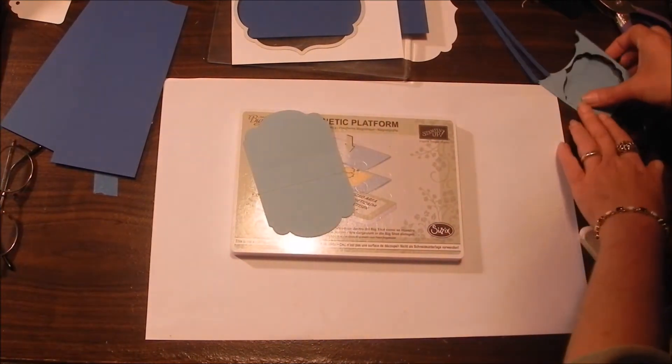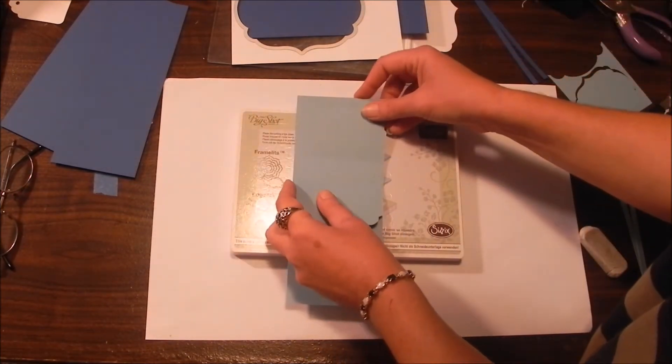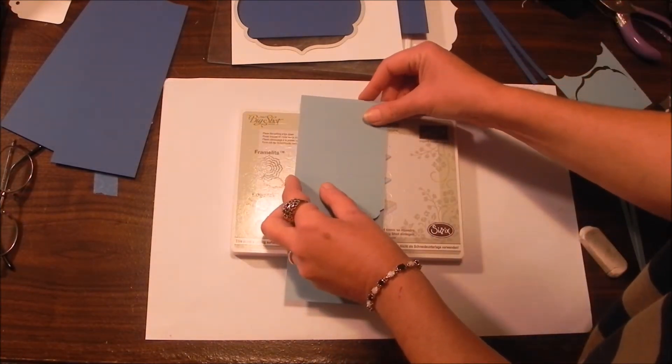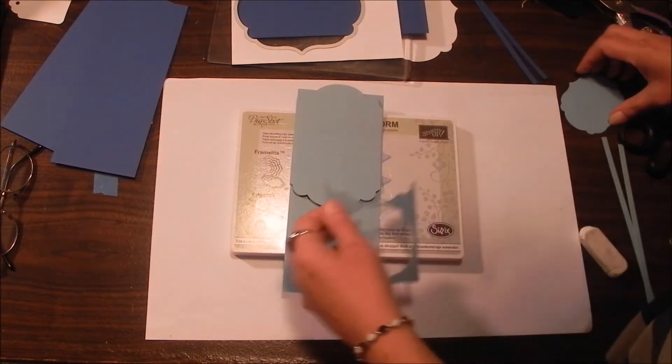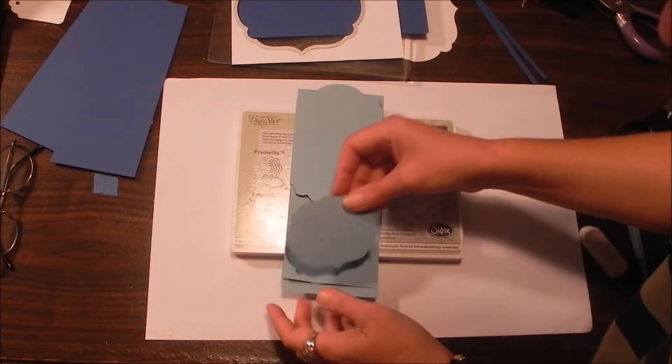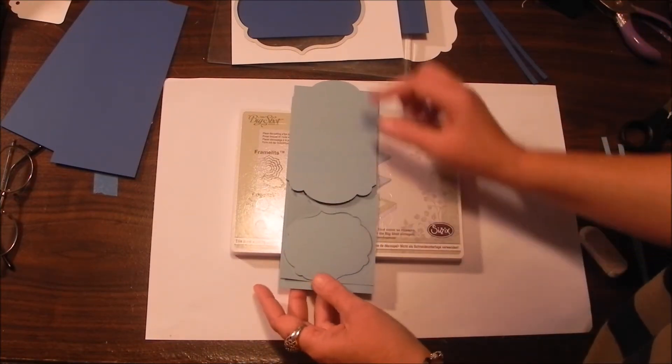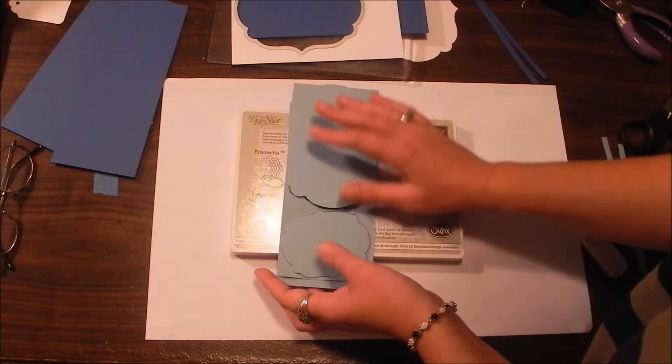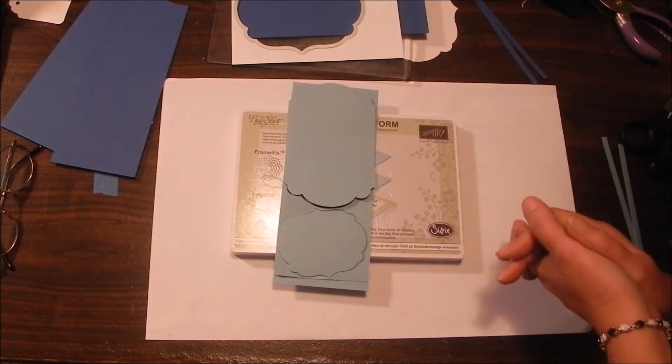Then as it happens, if you do that and you bring it like this, there is just enough remaining for you to take your other framelit and go ahead and cut out the companion piece. In this way, I can make six candy caddies pretty quickly.